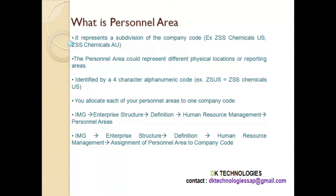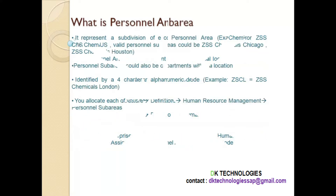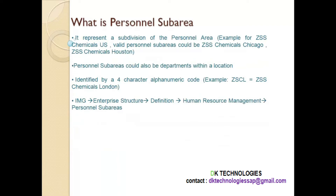What is personal subarea? Personal subarea is a further subdivision of the personal area. So the personal area was ZSS Chemicals US, and under US the personal subareas could be ZSS Chemicals Chicago or ZSS Chemicals Houston. So we start with company code, then personal area, then personal subarea.